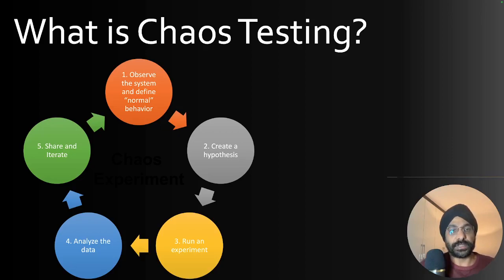Let's have a visual representation of what I'm trying to say and how to do the chaos testing. First of all, you observe the system and define normal behavior. What is the normal behavior of a system when it's running with everything around it?